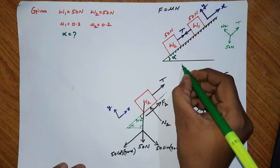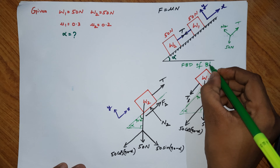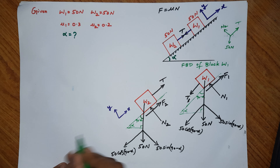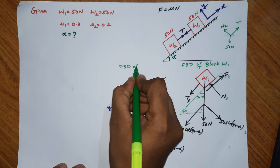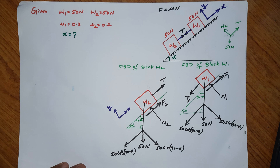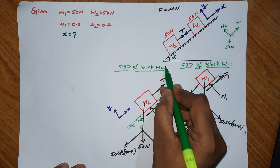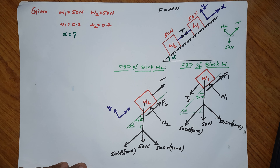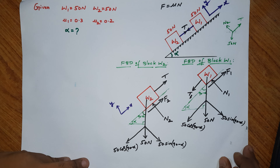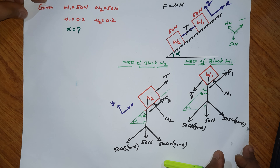In the free body diagram, label headings clearly: FBD of block W1 and FBD of block W2. Since both blocks are in static equilibrium, we apply equilibrium equations: Sigma Fx = 0, Sigma Fy = 0, and Sigma M = 0.